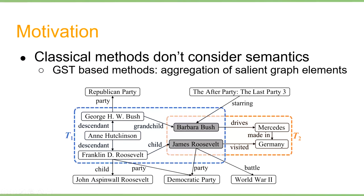One of the most popular methods to answer keyword queries is to model the problem as a Group Steiner Tree (GST). However, GST doesn't consider semantics. Consider the Bush-Roosevelt example again. The orange subgraph is a simpler graph: Barbara Bush drove a Mercedes, which was made in Germany, and James Roosevelt visited Germany. The graph does contain some information, but it's not very helpful. In contrast, the blue subgraph is more complex but describes meaningful relationships between Barbara Bush and James Roosevelt. We call the blue subgraph a semantically cohesive subgraph.